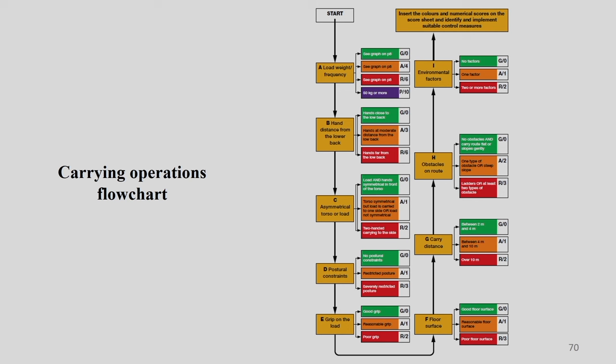Now let us understand the carrying operation flowchart. It starts similarly to the lifting assessment. It begins with load weight and frequency — that is Component A — which has four specific categories: green, orange, red, and purple. The second factor is hand distance from the lower back.